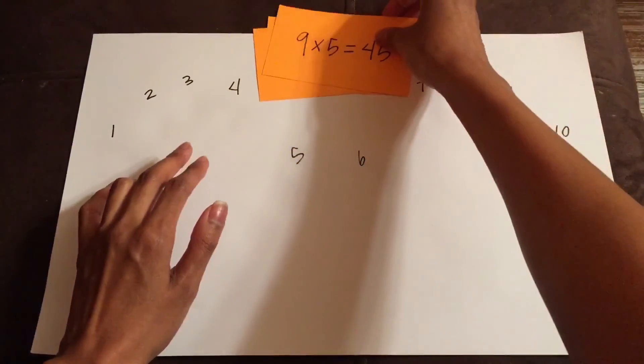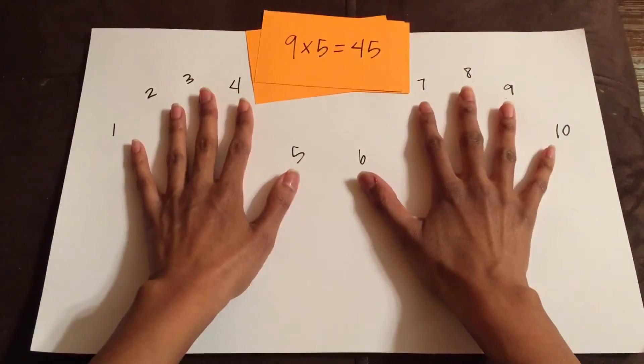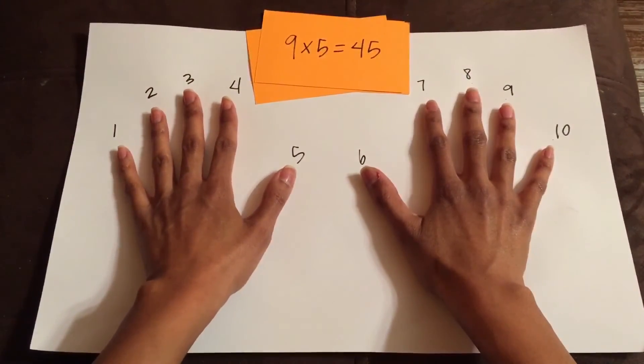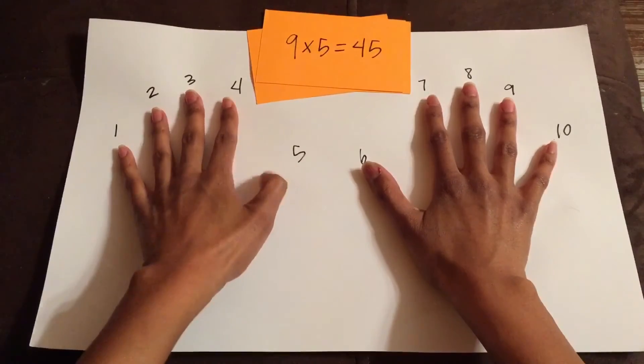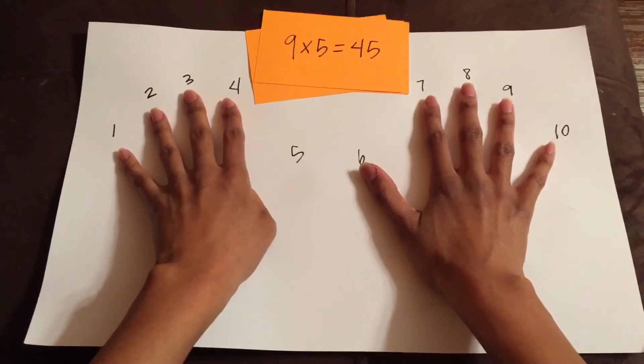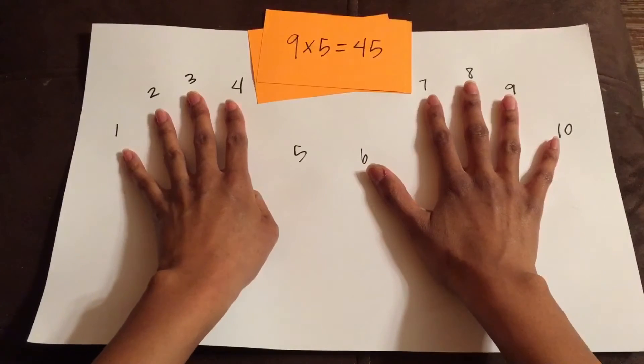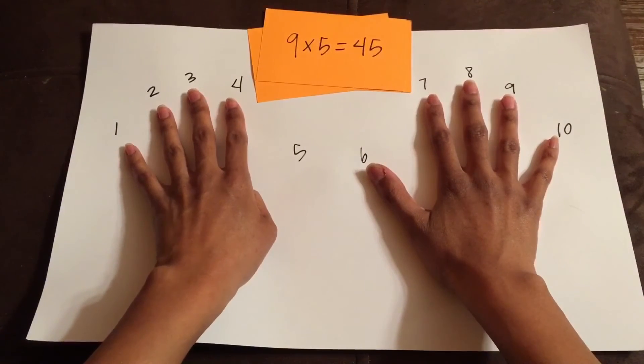One more example, just to make sure you understand. If I were to solve 9 times 5, I would hold down my 5th finger, and it's on the edge of my hand, so I didn't want that to confuse you, so I wanted to show you an example, but it works the same way.